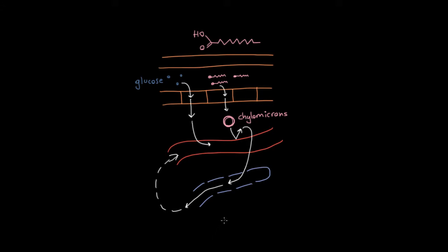Because this is such an important process, these lymphatic vessels in your small intestine are given a special name. And that name is lacteal. So the lymphatic vessels in your small intestine are known as lacteals. And those are the ones that take up your fats in the form of chylomicrons.